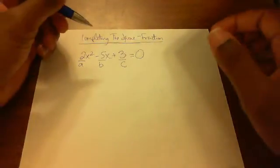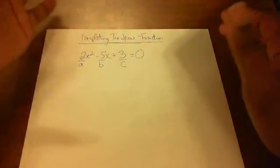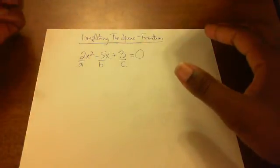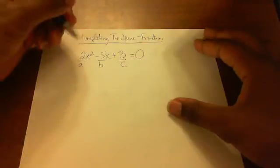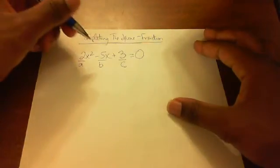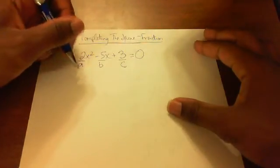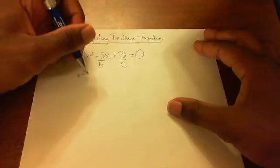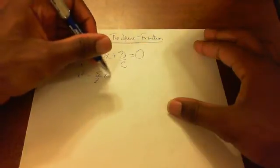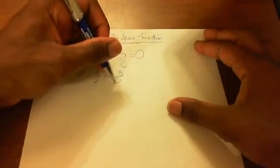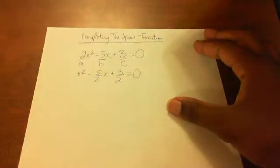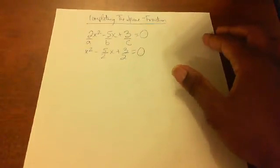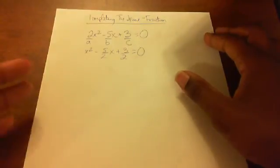So first thing I'm gonna do is try and get it in standard format, which is x² with the coefficient of 1. So I'm gonna divide this whole equation by 2. I'm gonna get x² - 5/2x + 3/2 = 0. Now you're looking at that problem like, not a good look, but it's all good though, right?